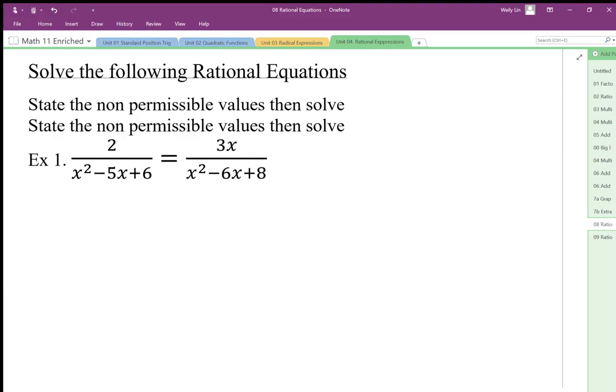We're going to solve these rational equations and we want to be able to state the non-permissible values before we solve. Now it's written twice because it's really important. Actually it's just a typo but make sure that you state your non-permissible values.